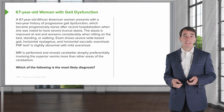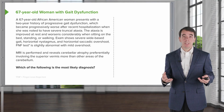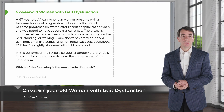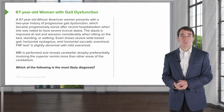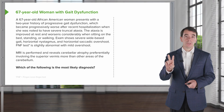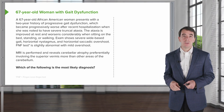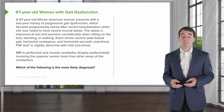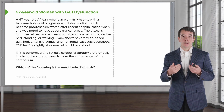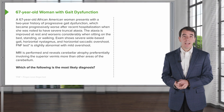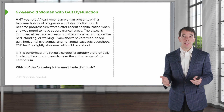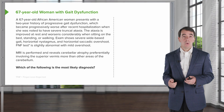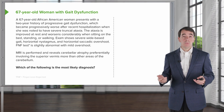Let's understand the clinical relevance of the cerebellar hemispheres, subcortical white matter, and gray matter by focusing on a case. This is a 67-year-old African-American woman who presents with a two-year history of progressive gait dysfunction, which became progressively worse after a recent hospitalization when she was noted to have severe truncal ataxia. The ataxia is improved at rest and worsens considerably when she's sitting on the bed, swaying from side to side, or when she's standing or walking — really with any movement.